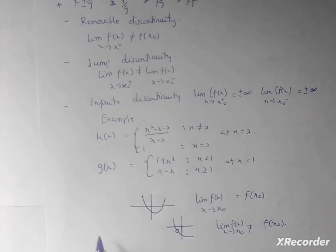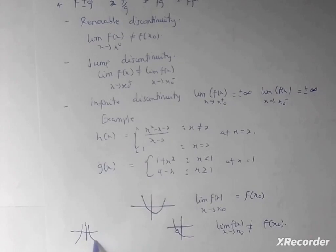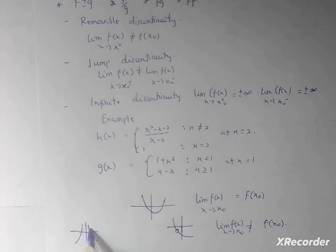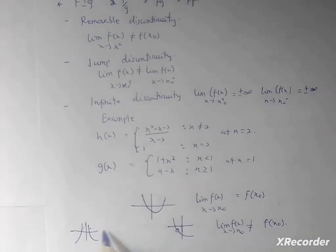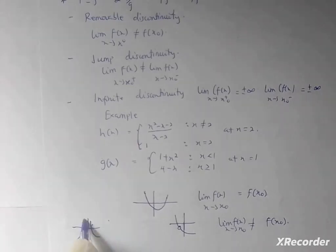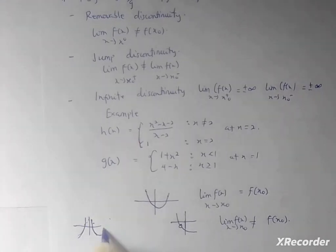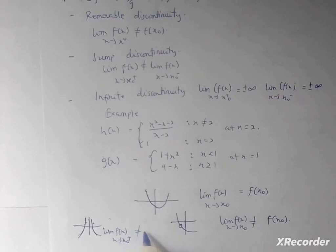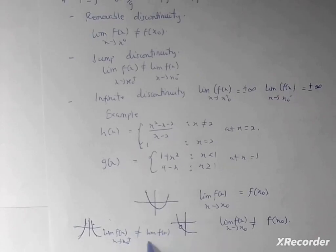Let's go to jump discontinuity. This is where you have one part of the graph here and another separate part, so the two parts of the function are infinitely apart and you have to jump from one before you go to the other. In jump discontinuity, the limit of f(x) as x approaches from the right side will not be equal to the limit from the left side, because the two pieces are separate. That is jump discontinuity.